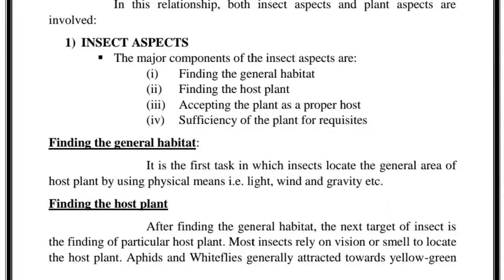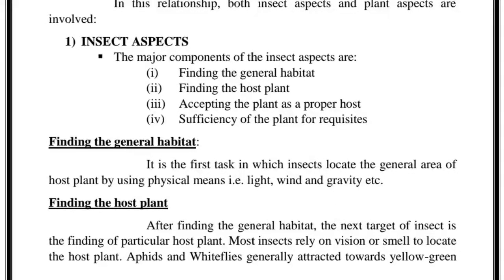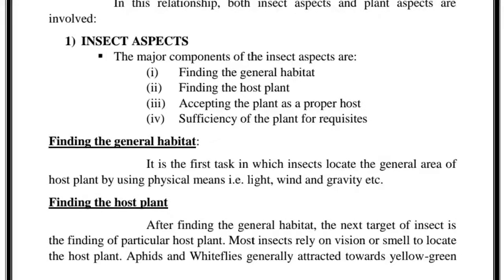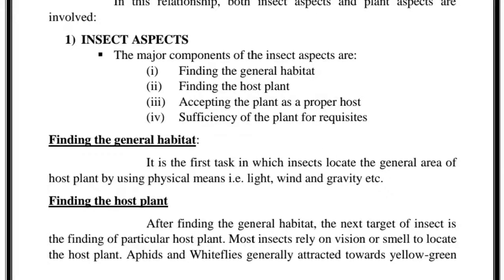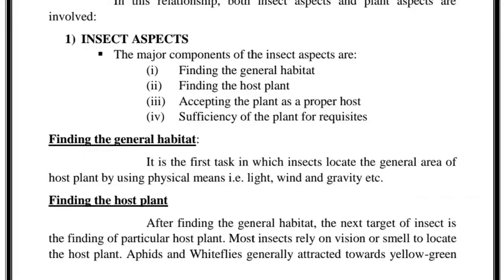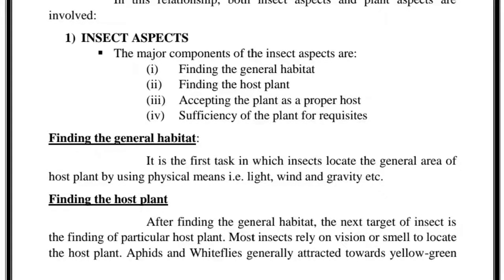The next major step is finding the host plant. Now that insects have located the general habitat — for example, the Rawalpindi area — they need to find the particular crop or particular host plant, such as cabbage or any other field crop. How can they locate that host? They usually use their vision or smell to locate their host plant.